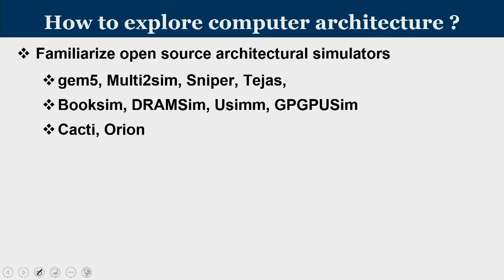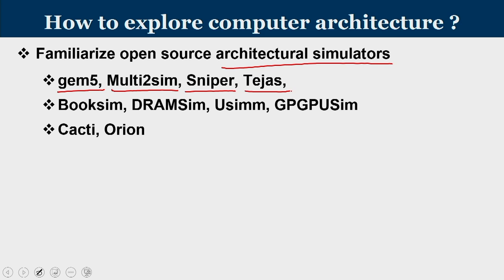Apart from reading research material, you need to familiarize yourself with simulators, especially when working in architectural systems. Open-source architectural simulators will help you a lot in implementing ideas. One such tool introduced in this course is JEMP5. Similarly, you have Multi2Sim, Sniper, Tejas, and many other tools that provide full system simulation. If you are focusing on one micro-architectural feature like cache, GPUs, or DRAM, then BookSim, DRAMSim, uSim, and GPUSim will all help. Power tools like Cacti and Orion are also available.